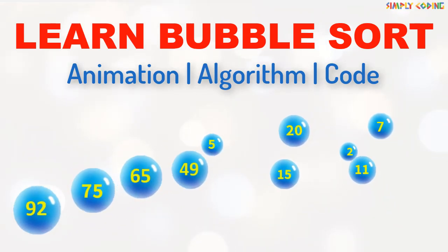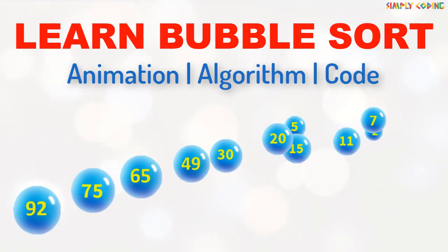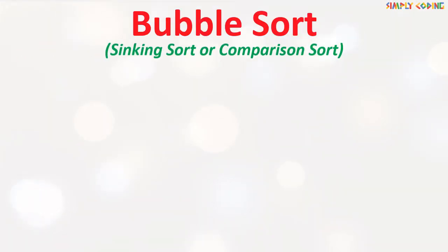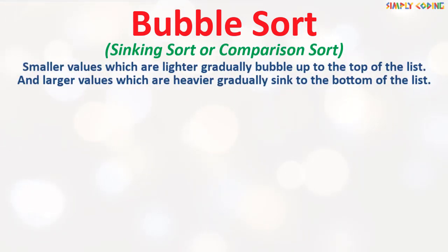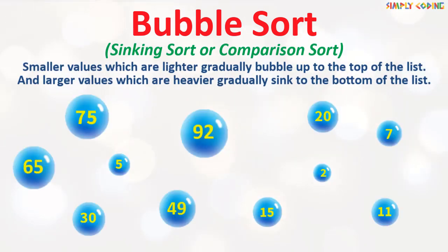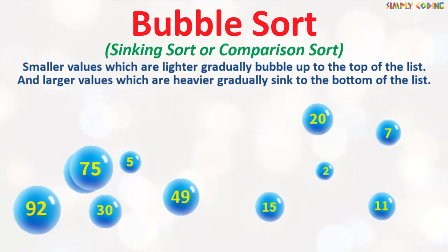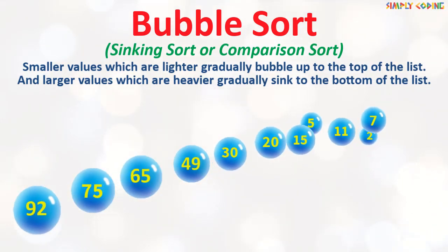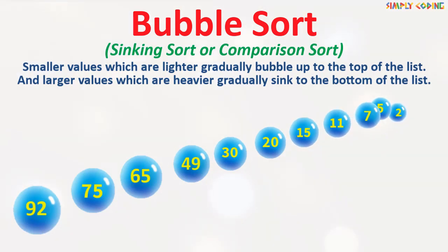In this video we are going to learn about bubble sort. Bubble sort algorithm is also called as sinking sort or comparison sort. The algorithm is named so as the smaller values, which are lighter, gradually bubble up to the top of the list, and larger values, which are heavier, gradually sink to the bottom of the list.